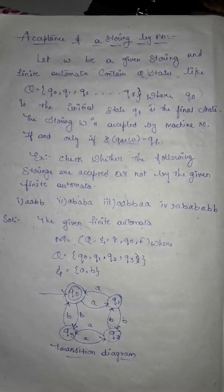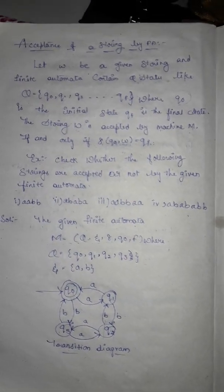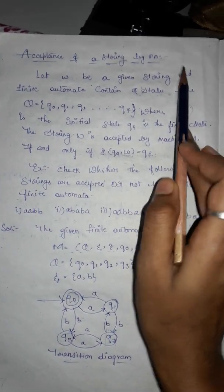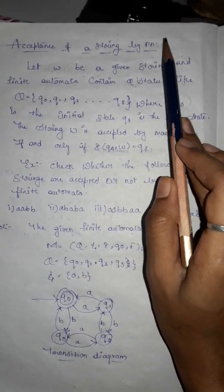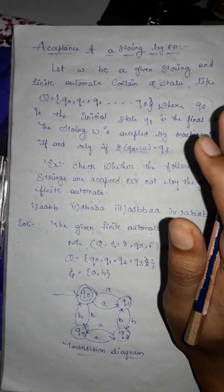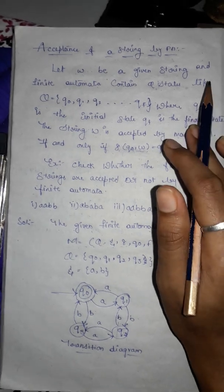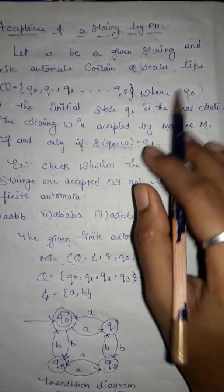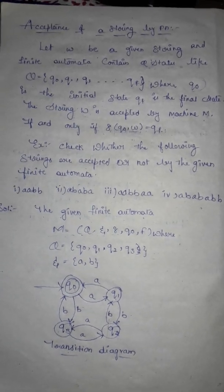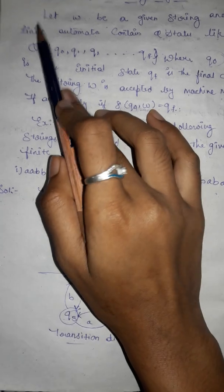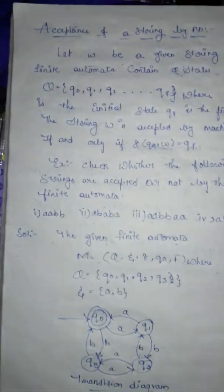Hello guys, today we are going to discuss the topic: acceptance of string by finite automata. As we already know, finite automata is described by five tuples: input, states, different states, transition function, input state, and the final state. These five tuples describe finite automata.